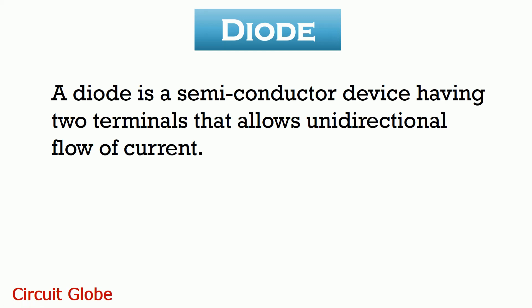A diode is a two-terminal semiconductor device that allows flow of current in one direction only. It is basically formed by the combination of P and N type semiconductor material, thus also called a P-N junction diode.